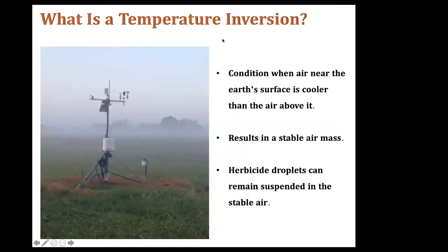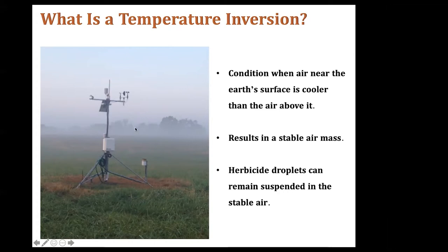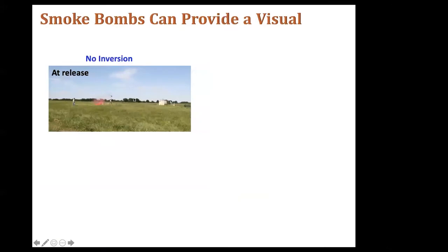What is a temperature inversion? To summarize, it's a condition when the air near the earth's surface is cooler than the air above it. Essentially, when the cool air is on the bottom, you get a stable air mass. I really like this picture from one of our weather stations equipped to monitor inversions. You can see the fog in the background — those droplets are suspended in the air because it is a stable air mass. Herbicide droplets similarly can remain suspended in that stable air.